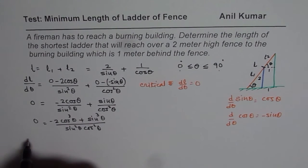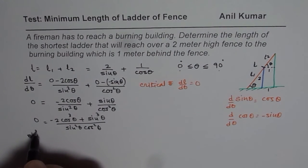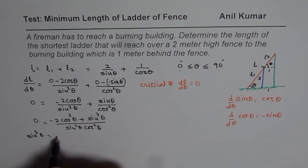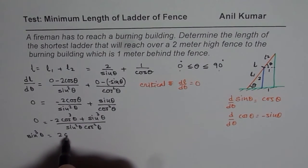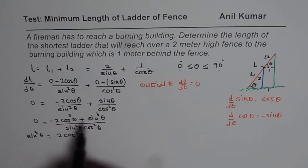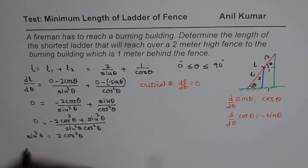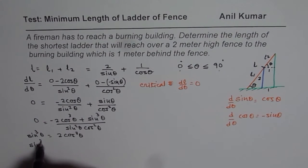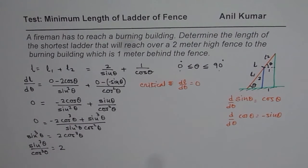That means I can write sin cube theta is equals to 2 cos cube theta. So we can take this on the left side. So we get sin cube theta divided by cos cube theta equals to 2 and this is tan.